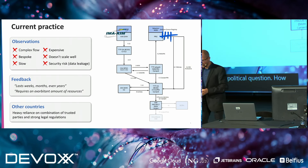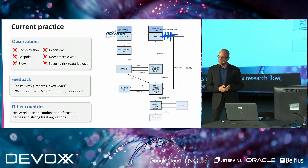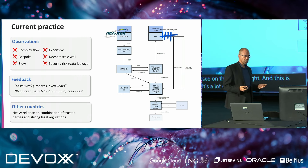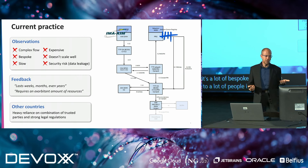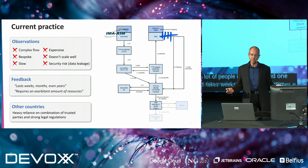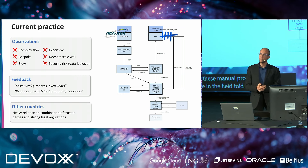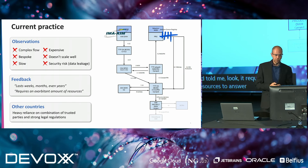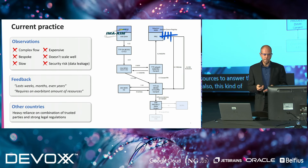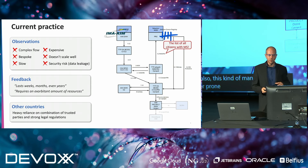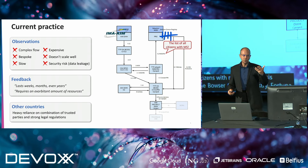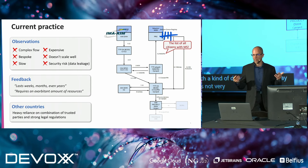How do we solve this today? Each time we have this kind of question, we make a complex research flow manually. It's a lot of bespoke work, which makes it slow. People in the field told me it takes weeks, months, sometimes even years before we can access the data. These manual procedures are also expensive — requiring an exorbitant amount of resources. And they are error-prone: in one concrete example, the list of all citizens with multiple sclerosis would have leaked to the cancer registry — fortunately detected just in time, leading to a solution that is not very practical and cannot be generalized. Other countries typically rely on a combination of heavily trusted parties combined with strong legal regulations, but an elegant privacy-by-design technical solution would be much better.